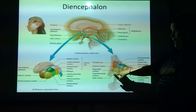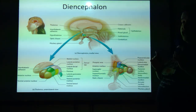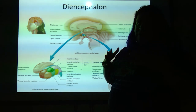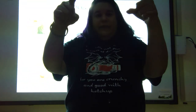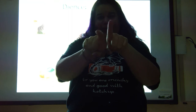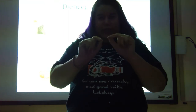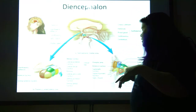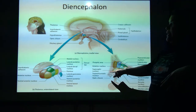The optic chiasm is actually where the optic nerves come in and kind of merge — I'll show it to you when we're looking at the optic nerve, but you can see it in this picture.